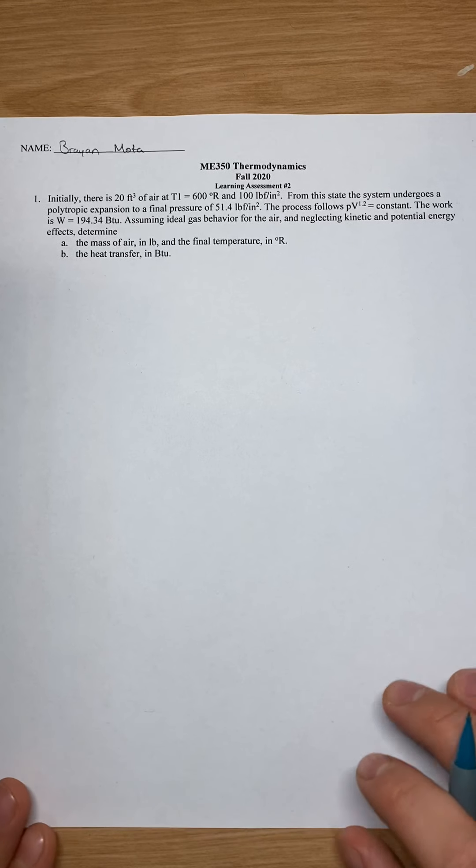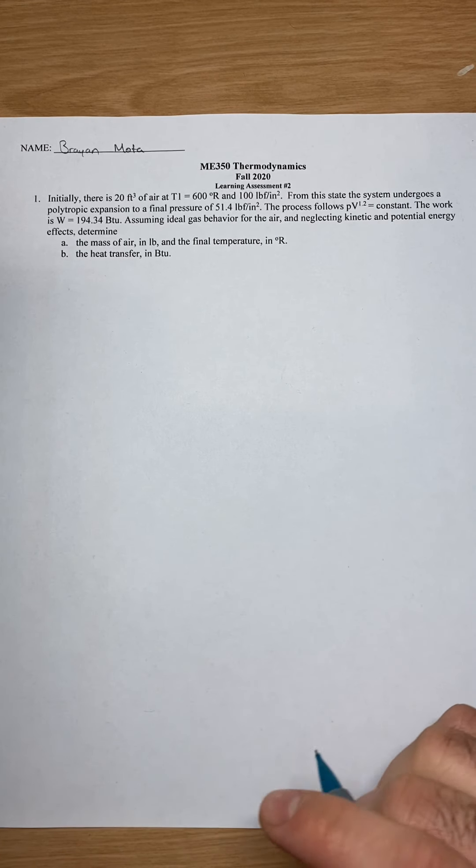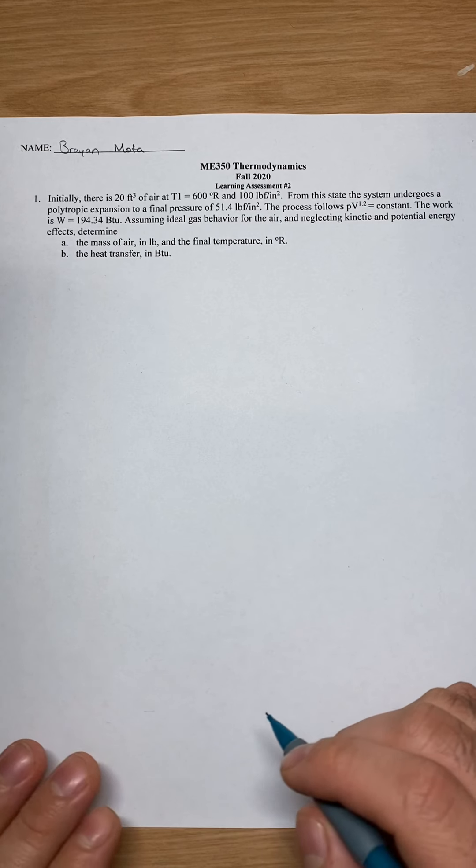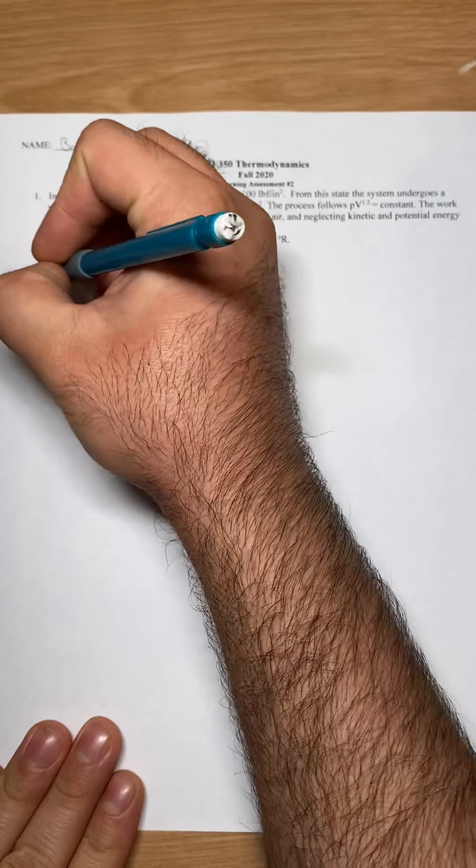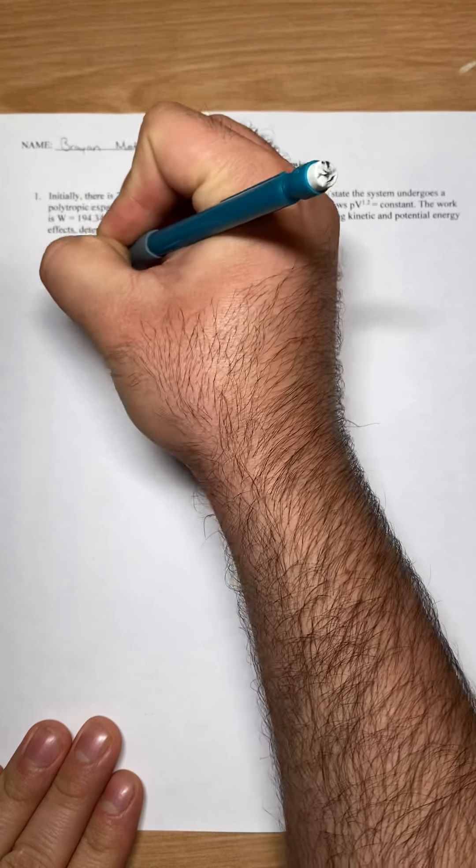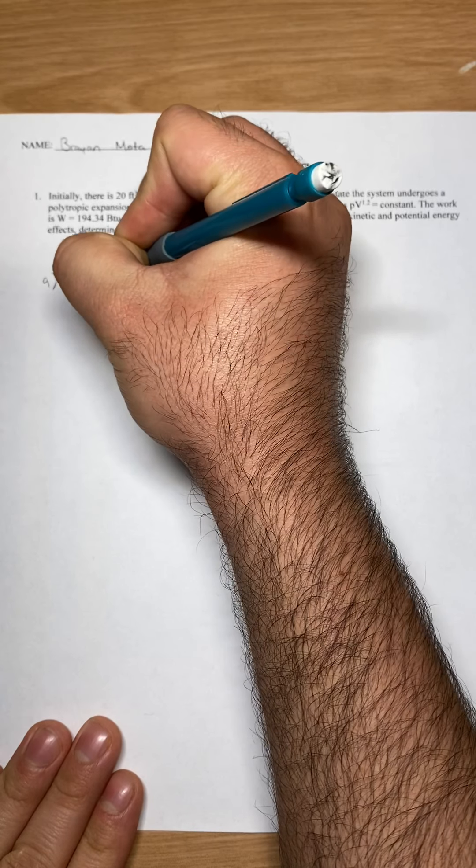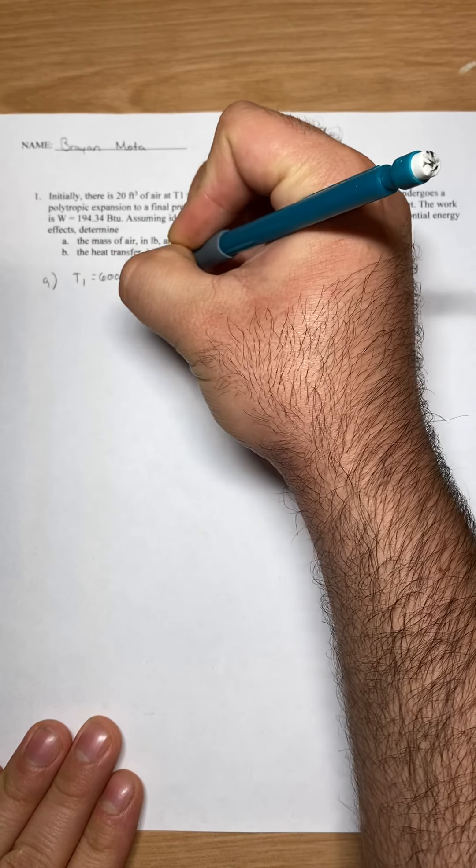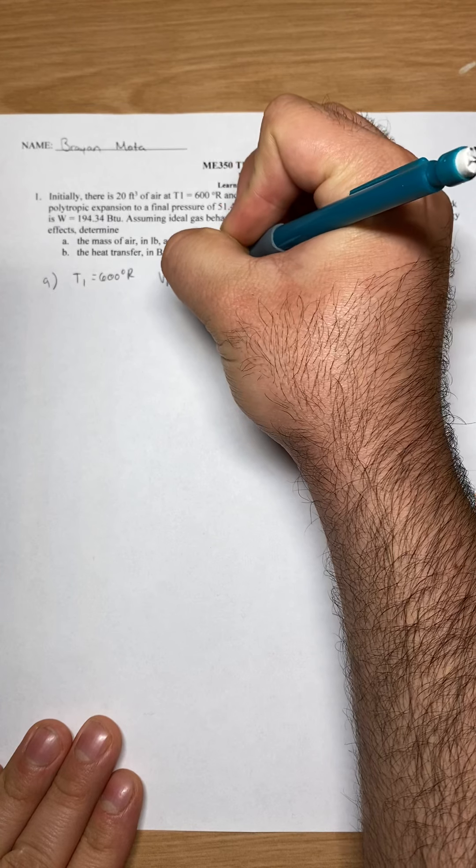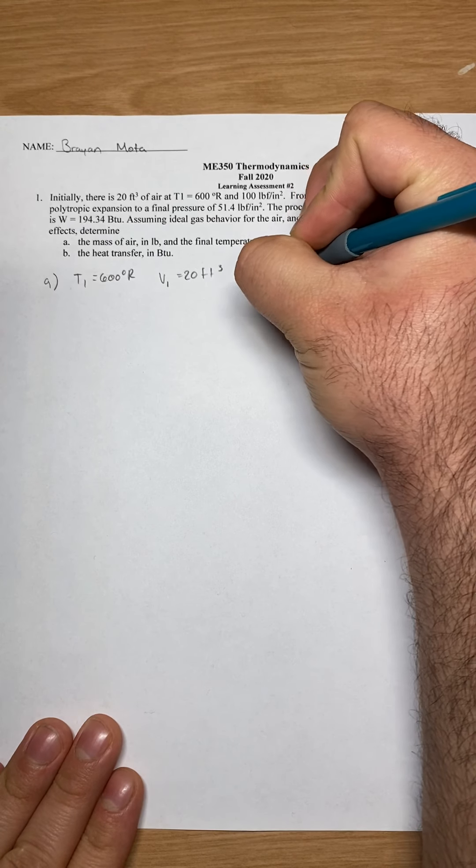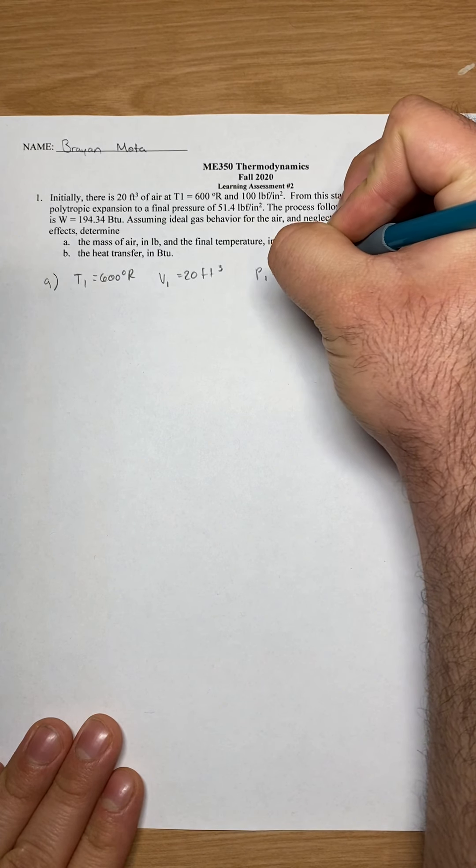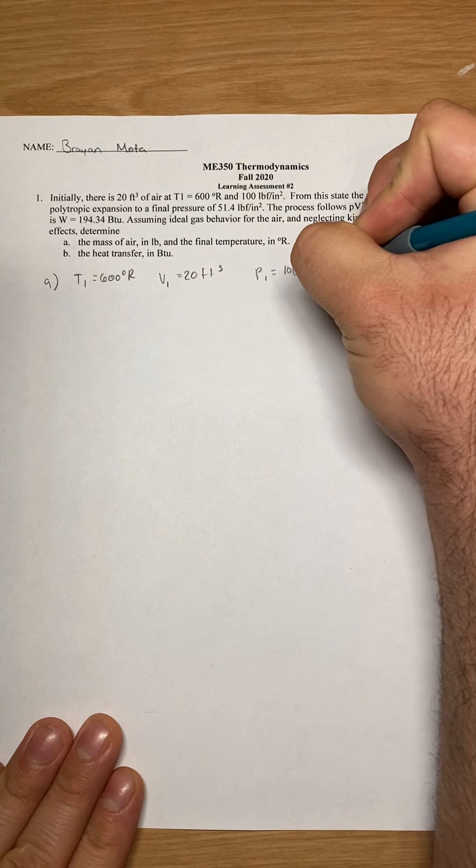We are looking for the mass of air in pounds and final temperature in Rankins. We are given T1 equals 600 Rankins, our volume is 20 feet cubed, our pressure one is given, which is 100 pounds per inch squared.